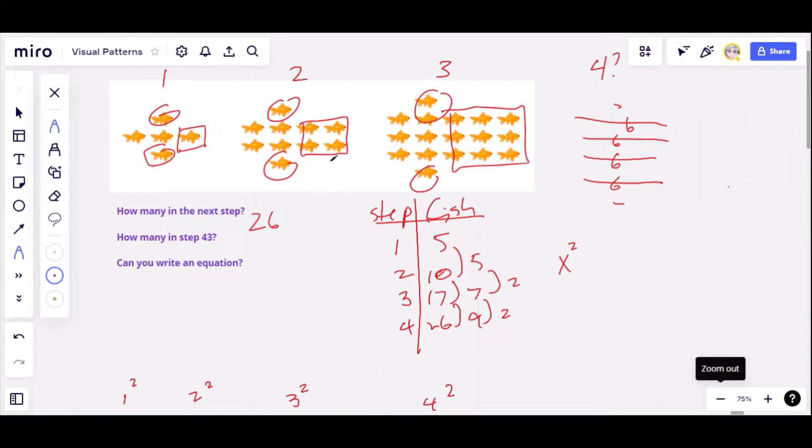If I look at step 2, here's my 2 squared. And then I've got these two chunks that are two long columns. So it's like two of the step number. So this might be x squared plus 2x. That would be these chunks. And then these two are just always on every step. So that's a plus 2 to add those two at the end.